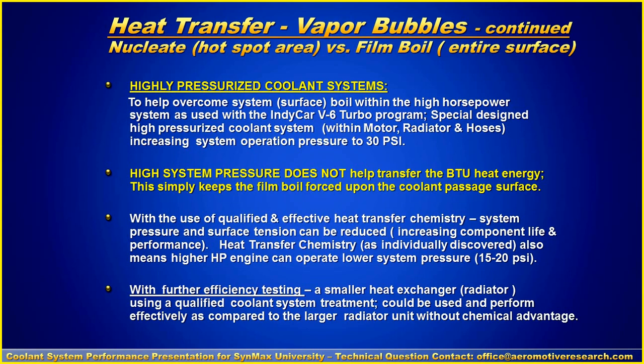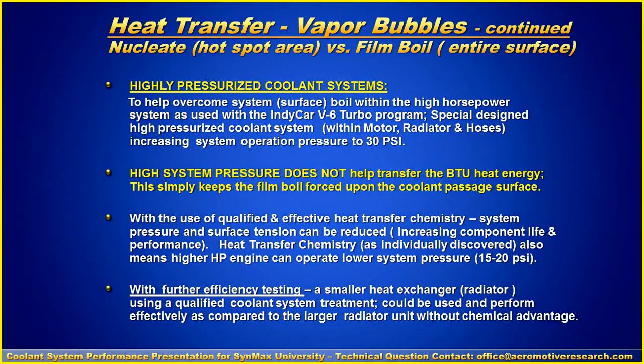Now with the use of a qualified and effective heat transfer chemistry the system pressure and surface tension can be reduced, increasing component life and performance. Heat transfer chemistry individually discovered also means that higher horsepower engines can operate with lower system pressure. In other words, if you can transfer the heat and work with the heat through convection you don't have to have the high pressure. And with further efficiency testing a smaller heat exchanger or radiator with a qualified coolant system treatment could perform as effectively as a larger radiator without a chemical advantage. So if you have a chemical advantage you can have a smaller radiator. If you don't have a chemistry performance advantage you have to have a large radiator to just try to disperse the heat.